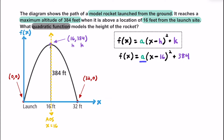To figure out the value for a, we're going to use the information that we have the point (32, 0). This 32 is going to represent x and the zero is going to represent f(x) — or f(32). So when x is 32, f(32) or y is going to be equal to zero. Let's go ahead and substitute 32 in for x and zero in for f(x).